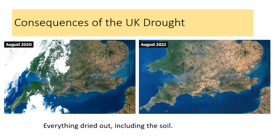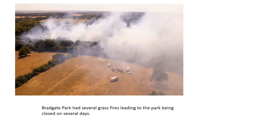The consequences can be seen from these two images here. The ground really dried out, including the soil. It was far less green than we would normally expect in the month of August. There were lots of consequences — for example, in Leicester, Bradgate Park had several grass fires, which led to the park being closed on several days.